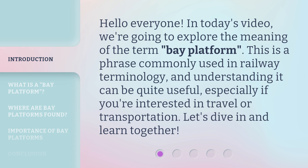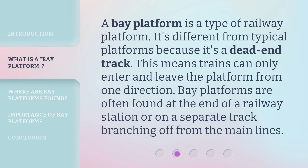Let's dive in and learn together. A bay platform is a type of railway platform. It's different from typical platforms because it's a dead-end track. This means trains can only enter and leave the platform from one direction. Bay platforms are often found at the end of a railway station or on a separate track branching off from the main lines.